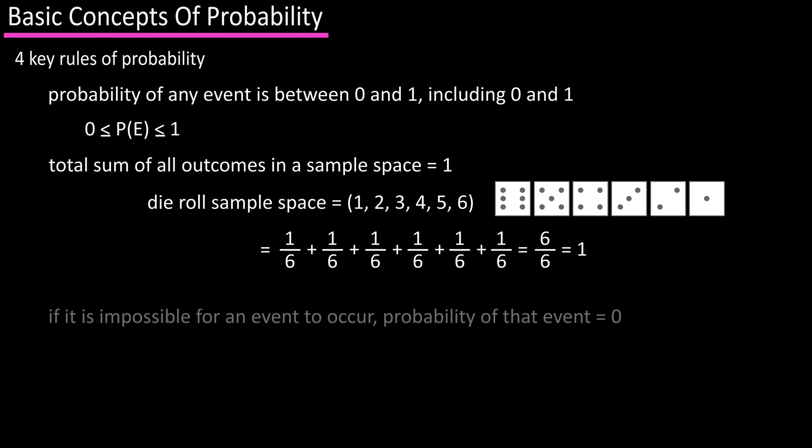Rule number three is if it is impossible for a given event to occur, so it's not part of the sample space, its probability is 0. For instance, the probability of rolling 8 on a die roll is not part of the sample space, so its probability is 0.